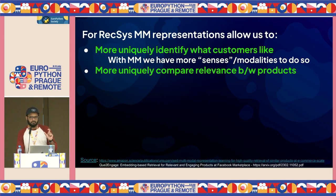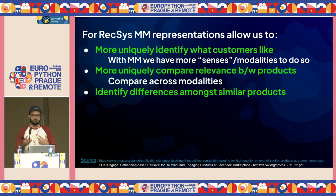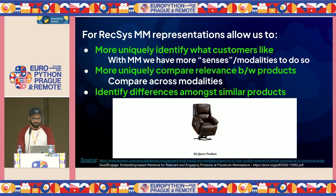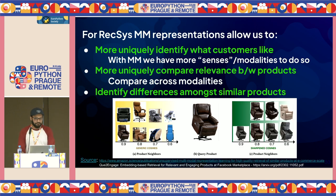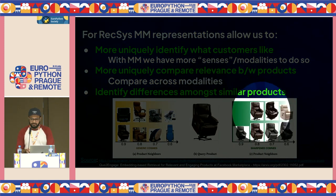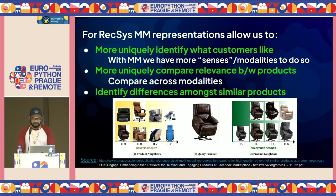You can compare products more uniquely across modalities: this is what it's described as, this is the metadata, but this is also what it looks like — and I don't like the way it looks. If you've got two very similar products, you now have multiple dimensions to differentiate them. This is work from Amazon: with a text-based recommender, clicking on a product would suggest functionally similar items that don't visually match. When they added the multimodality component, recommendations not only matched functionally but also looked the same — same position, similar visual features. This is the robustness multimodality adds to e-commerce recommender systems.